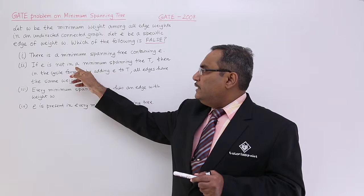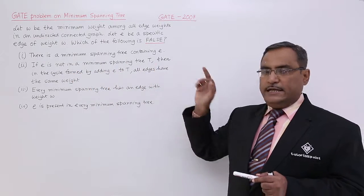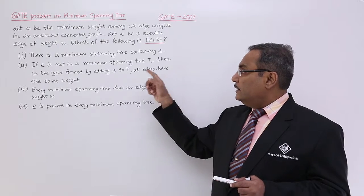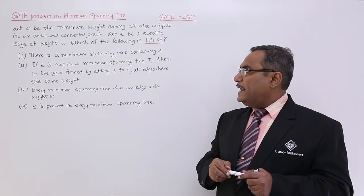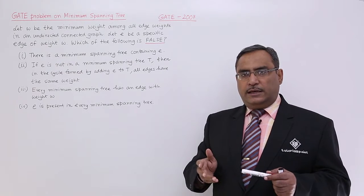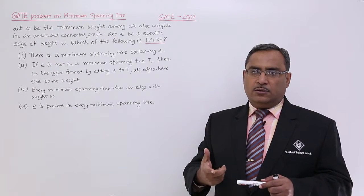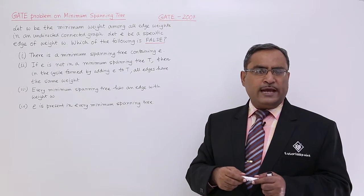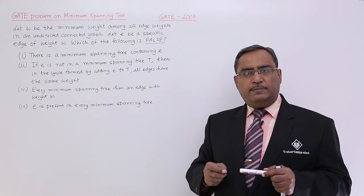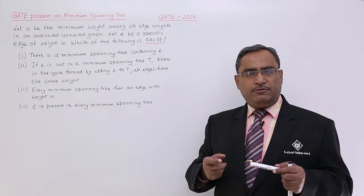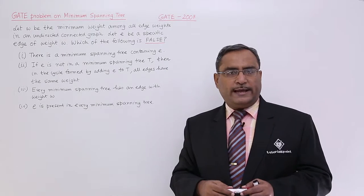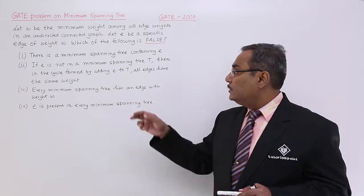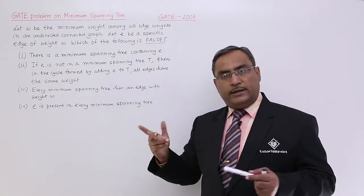If E is not in a minimum spanning tree T, let us suppose there is a minimum spanning tree where E is not there, then in the cycle formed by adding E to T. Obviously, in case of tree, if you go on adding any edge, whether it is E or E1 or E2, that will produce one cycle because n number of nodes will be connected by n minus 1 number of edges in a tree. So if you go on adding other edge, the cycle will be formed irrespective of the fact whether it is E or any other edge. All edges have the same weight, that can also happen.